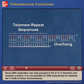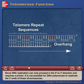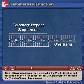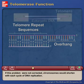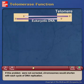Since DNA replication can only proceed in the 5' to 3' direction and requires a primer, it is not possible for DNA polymerase to replicate the 3' ends of linear chromosomes. If this problem were not corrected, chromosomes would shorten with each cycle of DNA replication.